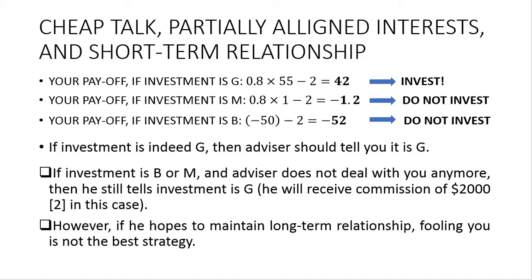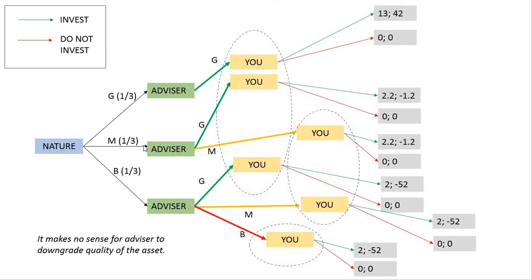In the decision tree, nature first decides on the type of asset, then advisor decides what to tell you, then you decide whether to invest or not. If investment is good, advisor has no incentive to downgrade — he will tell you it's good. If mediocre, advisor can report good or tell the truth, but has no incentive to say bad. We can forget about irrational options since telling you that a good asset is mediocre or bad would cause the advisor to lose his fee and capital gain.